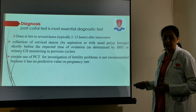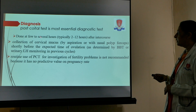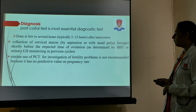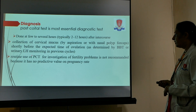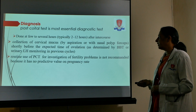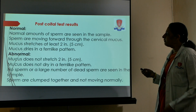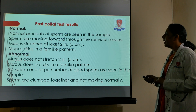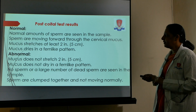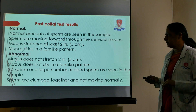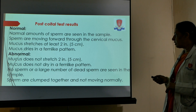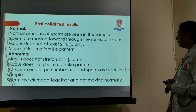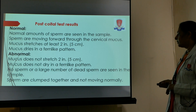The patient is asked to come shortly after intercourse in the morning, and collection of cervical mucus is done by aspiration with nasal polyp forceps shortly before the expected time of ovulation. Routine use of PCT for investigation of fertility problems is not recommended as it has no predictive value on pregnancy rate. The PCT result is normal if a normal amount of sperms are seen, sperms are moving forward in the cervical mucus, mucus stretches at least two centimeters (spinnbarkeit), and mucus dries in a fern-like pattern. If abnormal, the mucus does not stretch or dry in a fern-like pattern, no sperms or a large number of dead sperms are seen due to anti-sperm antibodies, and sperms are clumped together.